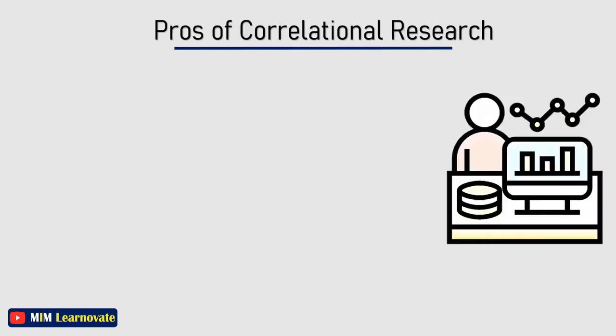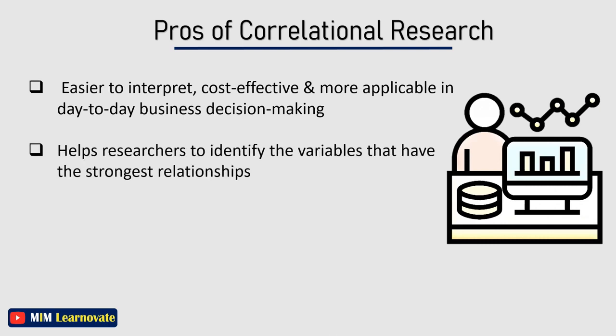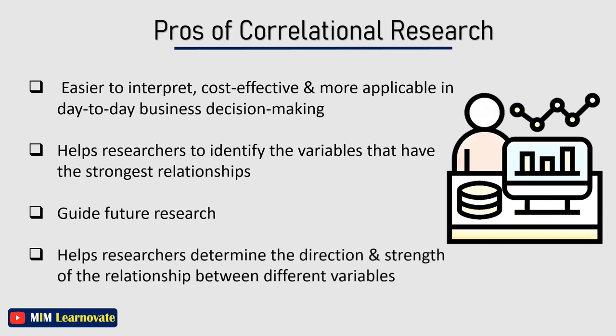The pros of using Correlational Research are that correlational methods are easier to interpret, cost effective, and more applicable in day-to-day business decision making. Correlational design helps researchers identify variables with the strongest relationship and make better decisions in the long run. Correlational methods can guide future research and help determine the direction and strength of the relationship between different variables.